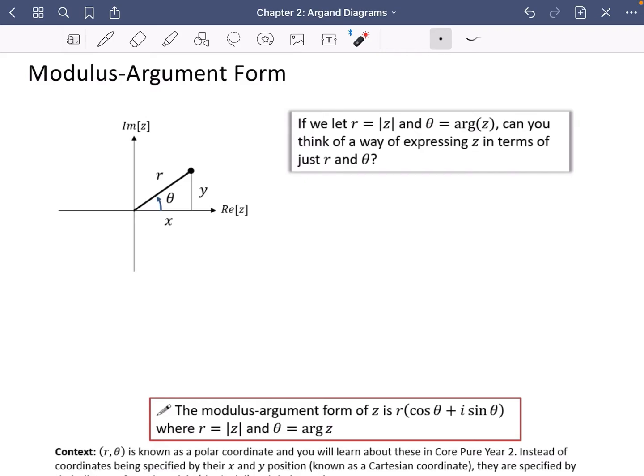Okay, next up is something called the modulus argument form of writing a complex number. This is really similar to what we've been doing so far, it's just a different way of presenting or writing a complex number.